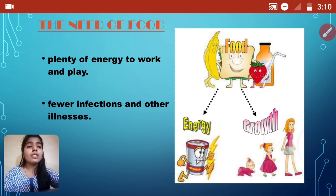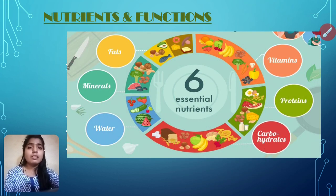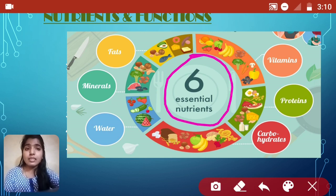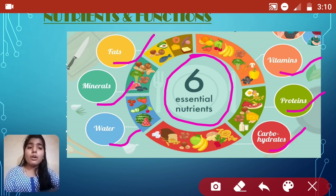There are six essential nutrients. How many? Six: fats, minerals, water, vitamins, proteins, and carbohydrates. These are all important for our health. Let's discuss these nutrients in detail.